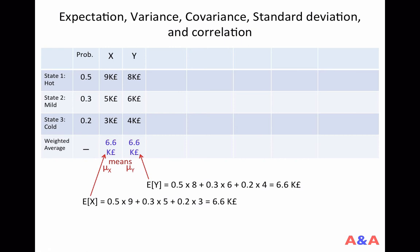Similarly, the expected value of Y, which is denoted as E[Y] or mu of Y, is also again computed as the weighted average of these possible realizations using probabilities as weights. If you compute it, it turns out also 6.6,000 pounds.